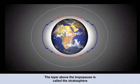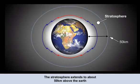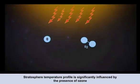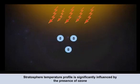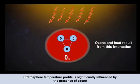Having discussed the troposphere and its upper boundary, the tropopause, we'll now look at the next layer — the stratosphere. The stratosphere extends from the tropopause up to about 50 kilometres above the Earth's surface. The temperature structure of the stratosphere is dominated by the presence of ozone. Ozone is formed when solar radiation splits oxygen into its two individual atoms, which are then free to combine with others to form ozone. This process releases energy into the surrounding air, heating that part of the atmosphere.